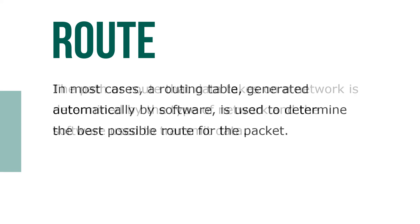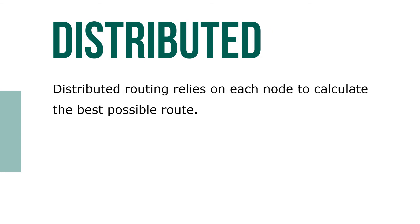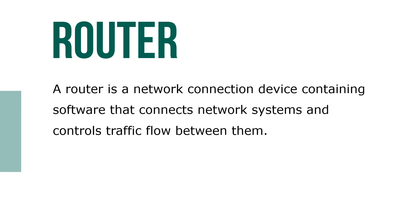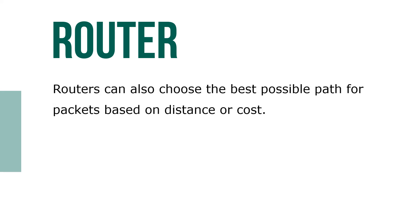In most cases, a routing table generated automatically by software is used to determine the best possible route for a packet. In centralized routing, one node is in charge of selecting the path for all packets. Distributed routing relies on each node to calculate the best possible route. A router is a network connection device containing software that connects network systems and controls traffic flow between them. A router performs the same functions as a bridge but is a more sophisticated device, and can also choose the best possible path for packets based on distance or cost.